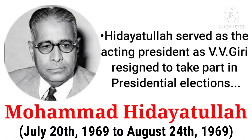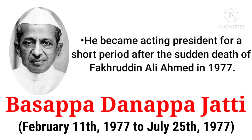Mohammad Hidayatullah was the second acting president of India from 20th July 1969 to 24th August 1969, serving after V.V. Giri resigned to take part in presidential elections. B.D. Jatti was the third acting president of India from 11th February 1977 to 25th July 1977, becoming acting president after the sudden death of Fakhruddin Ali Ahmed in 1977.